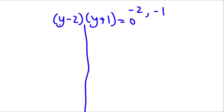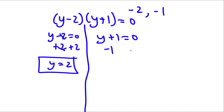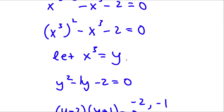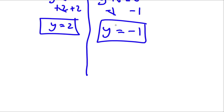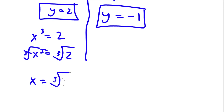This gives me two equations: y minus 2 equals 0, giving y equals 2; and y plus 1 equals 0, giving y equals negative 1. Since x to the power of 3 equals y, if y equals 2 then x to the power of 3 equals 2, and taking the cube root on both sides gives x equals the cube root of 2. If y equals negative 1, then x to the power of 3 equals negative 1, and taking the cube root gives x equals negative 1.